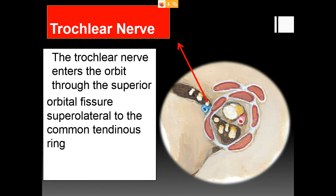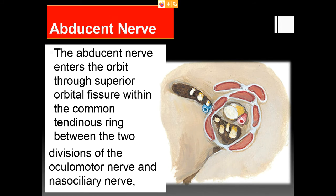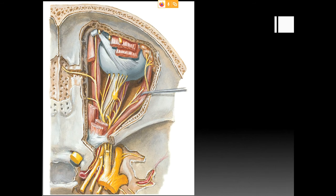The trochlear nerve enters the orbit through the superior orbital fissure superolateral to the common tendinous ring of Zinn, then curves medially above the levator palpebrae superioris to reach deep to the posterior part of the superior oblique, which it supplies. The abducens nerve enters the orbit through the intermediate compartment of the superior orbital fissure and supplies the lateral rectus muscle.